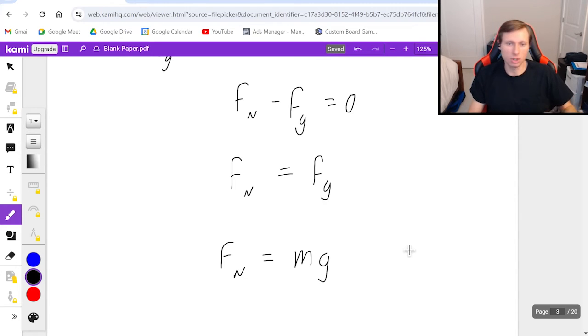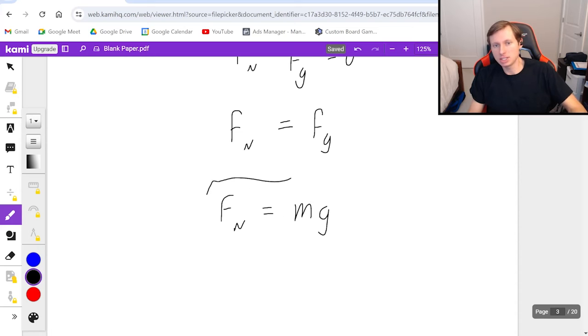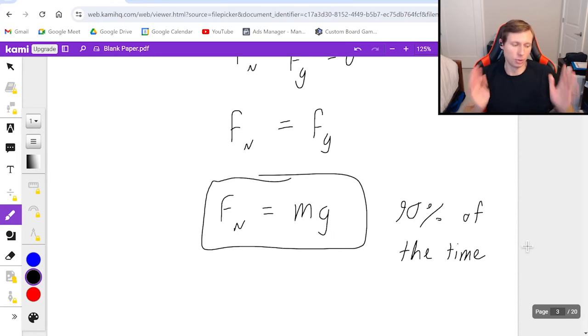Long story short, the normal force is equal to mass times gravity. And this is going to be true 90% of the time, meaning the normal force is almost always equal to mass times gravity. There are three exceptions to this rule. Otherwise, normal force equals MG.